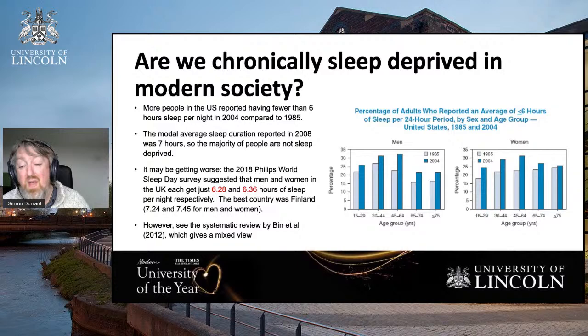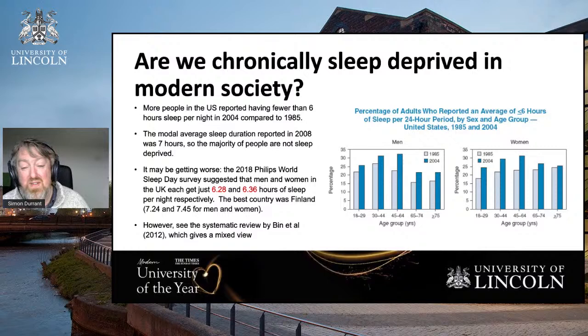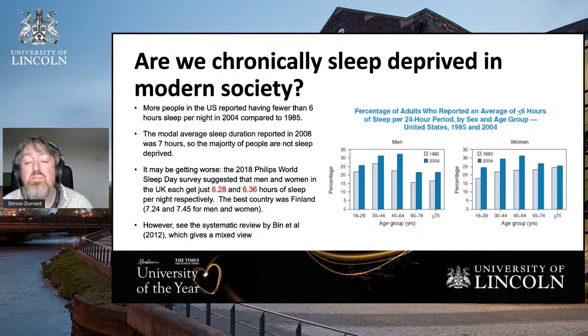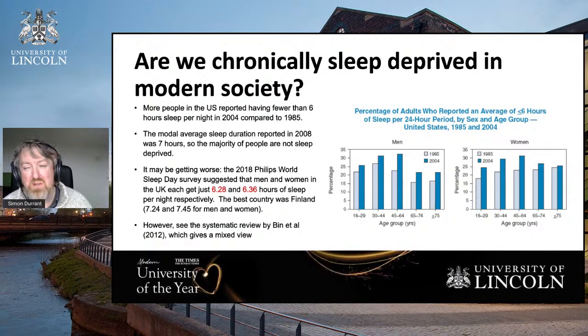However, we are still getting on average around seven hours a night, so it's not too bad. The amount of sleep varies across countries. Finland — where people tend to get around seven to seven and a half hours, and which has excellent educational outcomes — offers a little bit of evidence that sleep might be good for achievement and cognition. The UK comes in at around six and a half to seven hours in that survey. We probably are getting less sleep than we used to, but we're still getting more or less enough — we're not as badly sleep deprived as we tend to think.